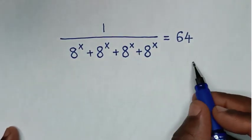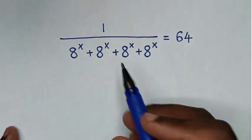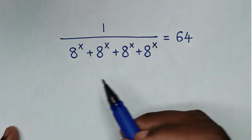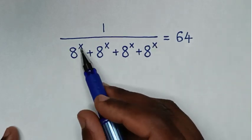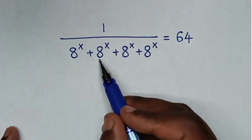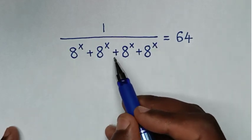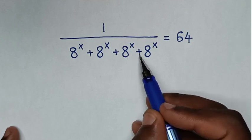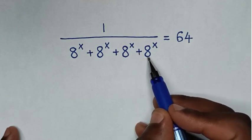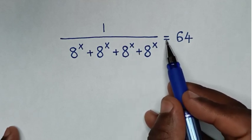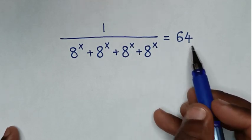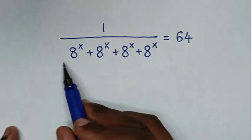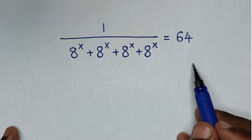Welcome. We are going to solve this math problem: 1 over (8 to the power of x, plus 8 to the power of x, plus 8 to the power of x, plus 8 to the power of x) equals 64. We need to find the value of x from this equation.